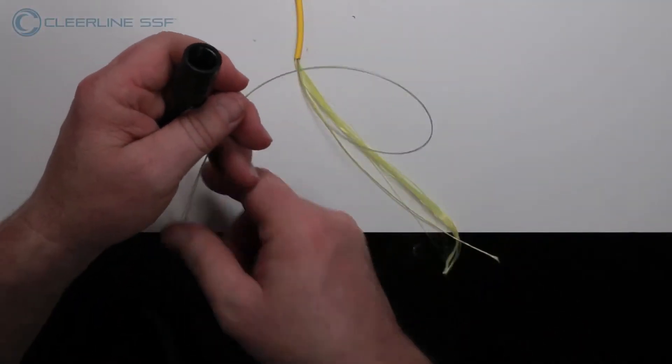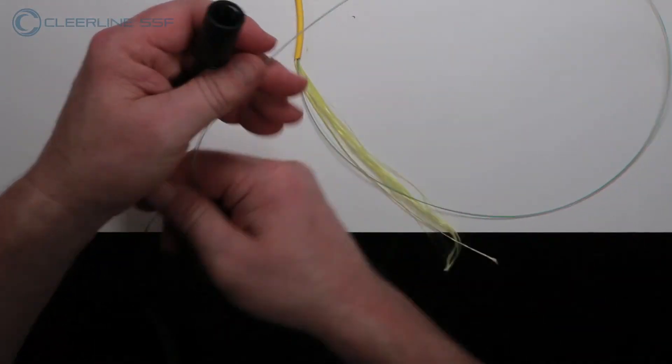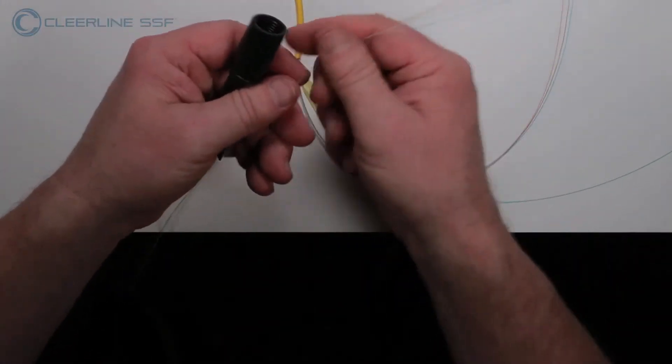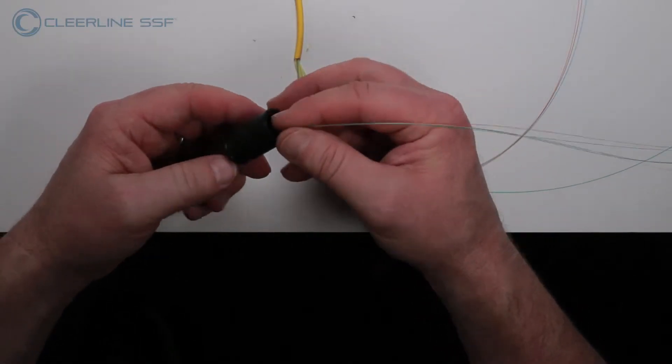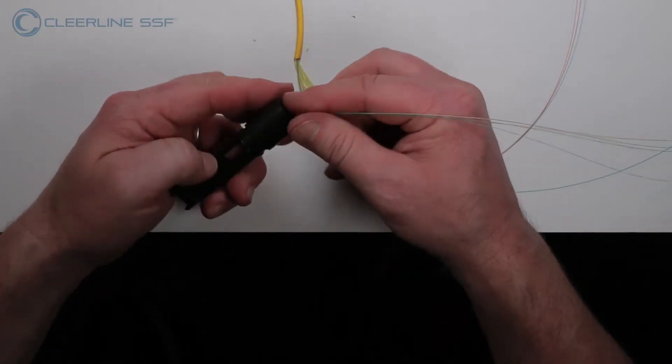Slide the housing over the exposed fibers. Place fibers 1 through 6 all on one side of housing for a 6 fiber kit and place fibers 7 through 12 on the other side if installing a 12 fiber kit.